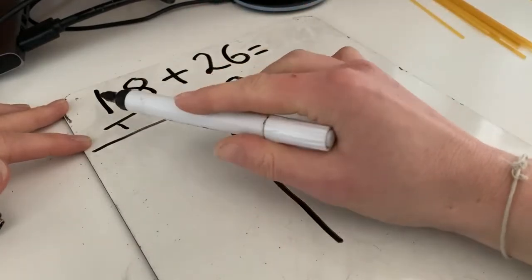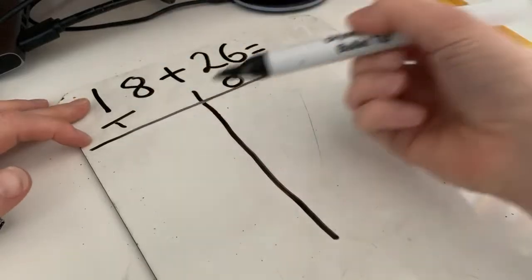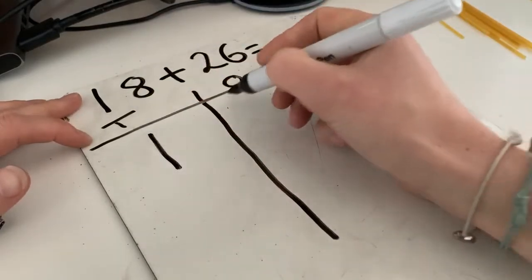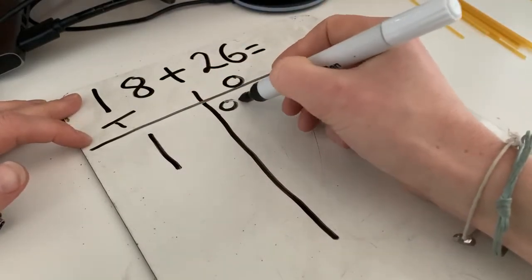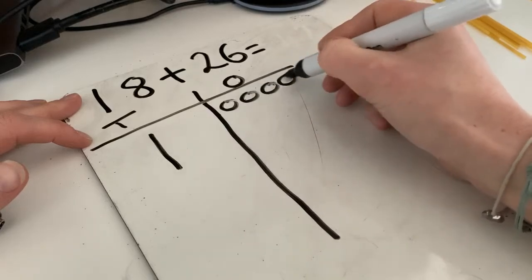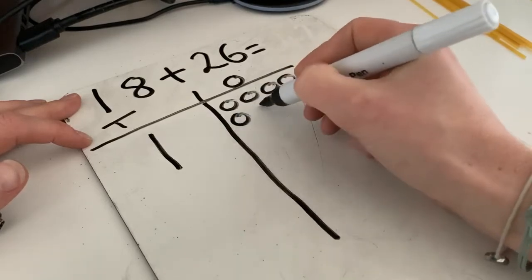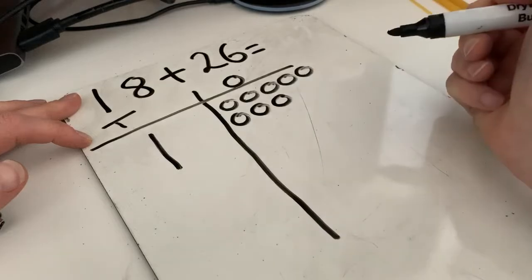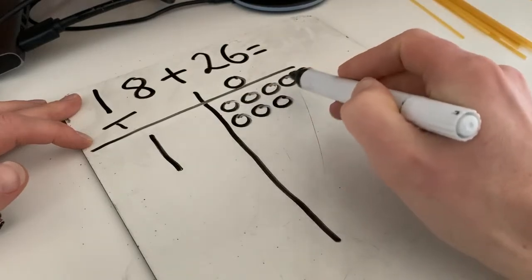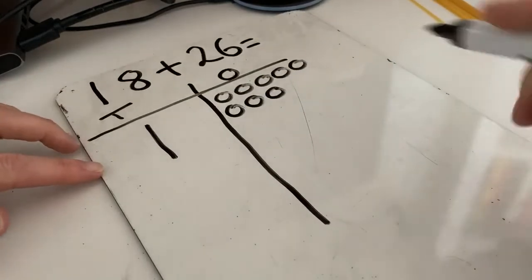And then we need to add in our numbers. So we've got one ten and eight ones. One, two, three, four, five, six, seven, eight. Remember to keep them nice and clear so you can see them easily when you're counting up.